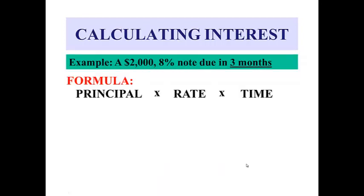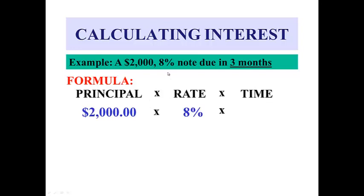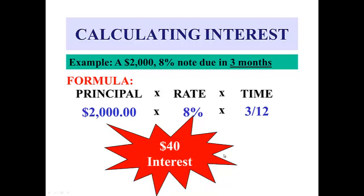Let's review calculating interest. The formula for interest is principal times rate times time. The time may be listed in different ways, or referred to as the term. For example, the term of this note is 3 months, so we will keep the time in the calculation in months. The principal of $2,000 times the rate of 8% times 3 months divided by 12 months gives us an interest calculation of $40.